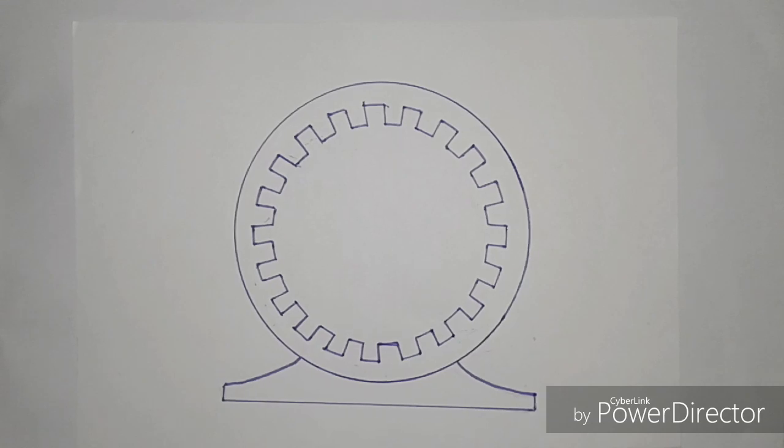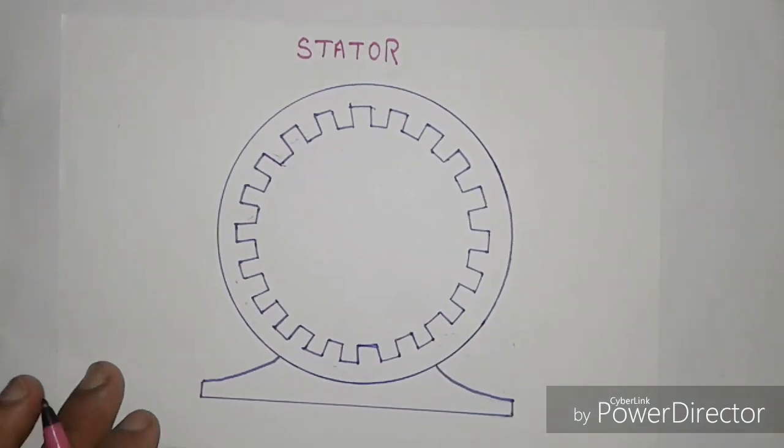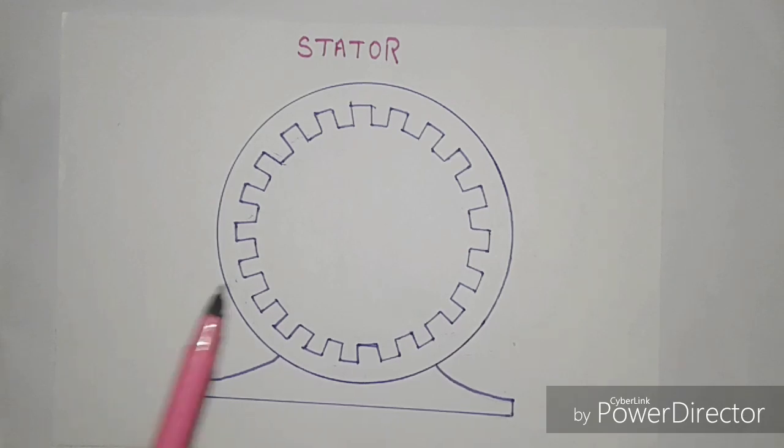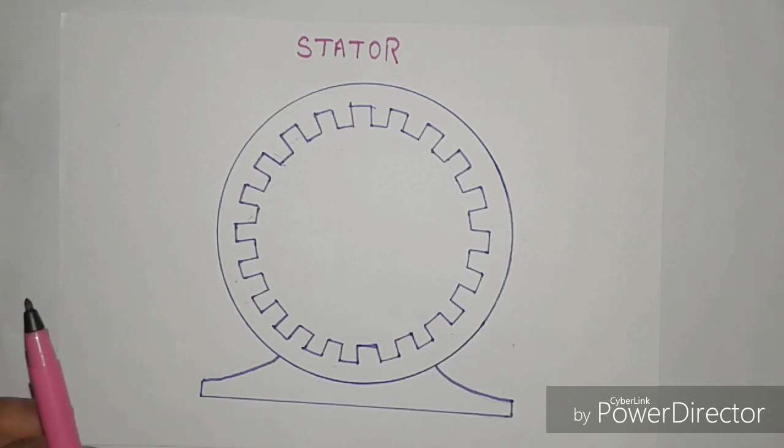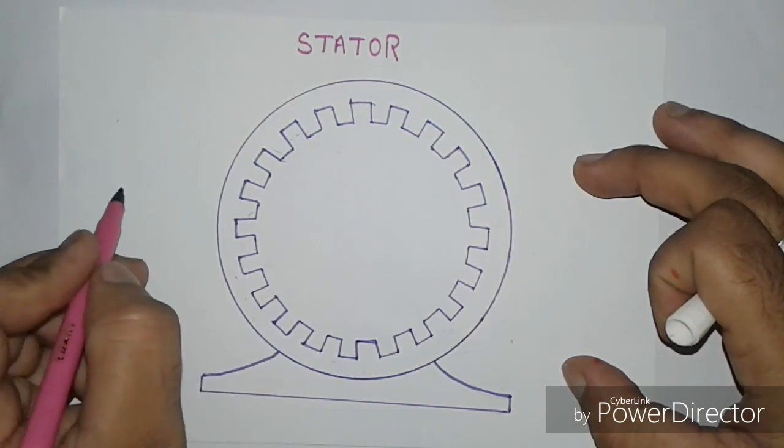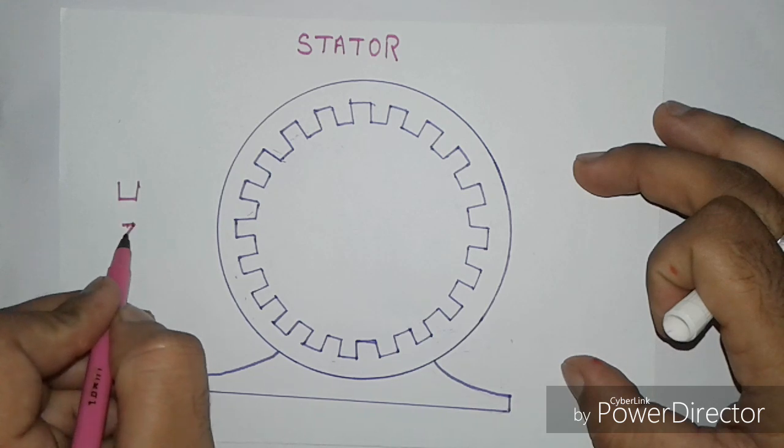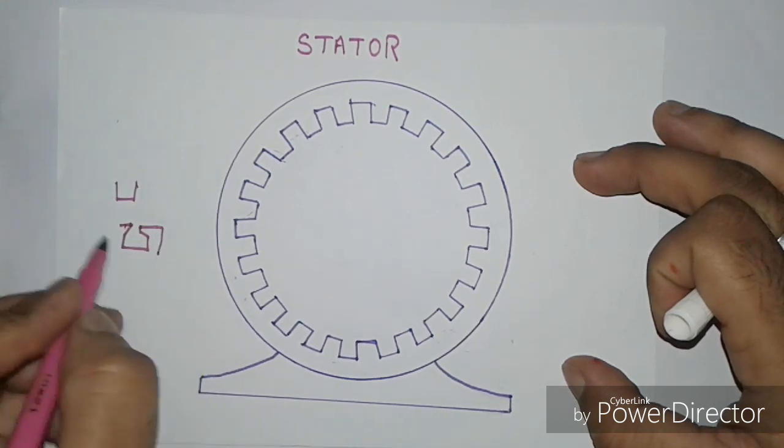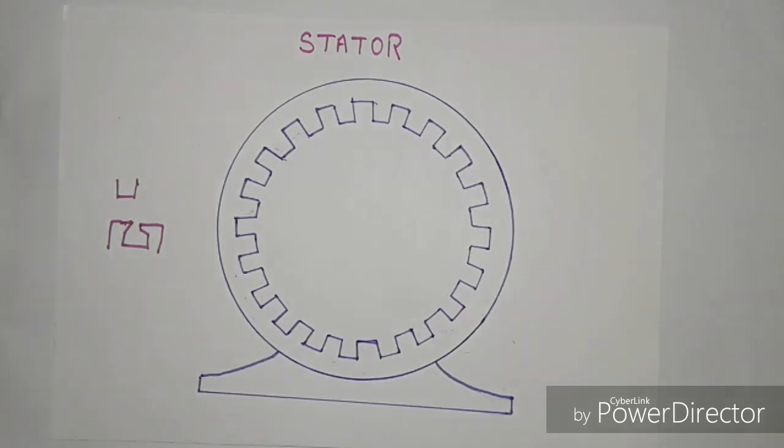The stator is a stationary part of an alternator and it is made up by joining thin laminated silicon steel strips together. In the inner part of the stator, some slots are cut. These slots are either open type or semi-closed type in which armature winding is placed. The stator is welded or screwed to the frame to prevent vibration.